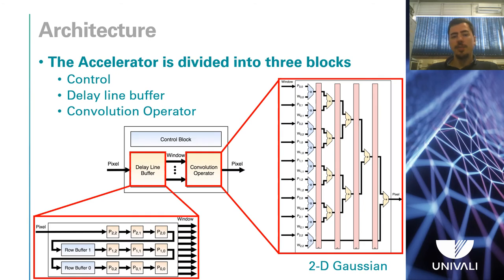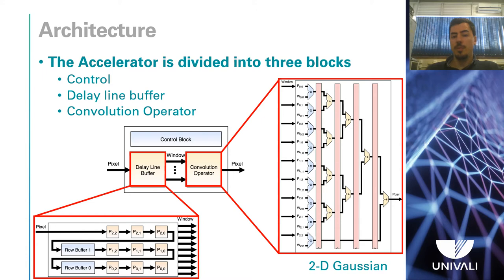With the definition of the filter, we start to build the architecture. The accelerator is divided into control, delay line, and convolution block. The delay line is used to reduce access to the image memory, the initial delay being the size of the mask in cycles and after that one cycle is needed. The first convolution block is the 2D Gaussian. There are multipliers in the first stage to multiply the pixels with the mask, and in the subsequent stages, partial additions with pipeline registers are implemented to break the critical path.